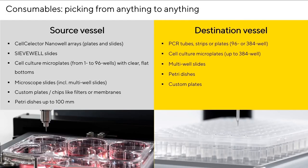When looking closer at the picking modules, the system can be equipped with a semi-solid picking module that takes advantage of disposable tips, an adherent colony picking module using reusable stainless steel tips, and a single cell picking module using glass capillaries, which is the most versatile picking module. Once the picking module is installed, it is automatically recognized and all corresponding picking protocols are loaded within the software. Cell Selector Flex allows picking from almost anything to anything. As a source vessel, we can use nano well arrays, cell culture microplates with clear flat bottoms, microscope slides, petri dishes, and even custom plates. We can deposit material in cell culture microplates, multiple slides, petri dishes, and even PCR tubes, strips, or plates.